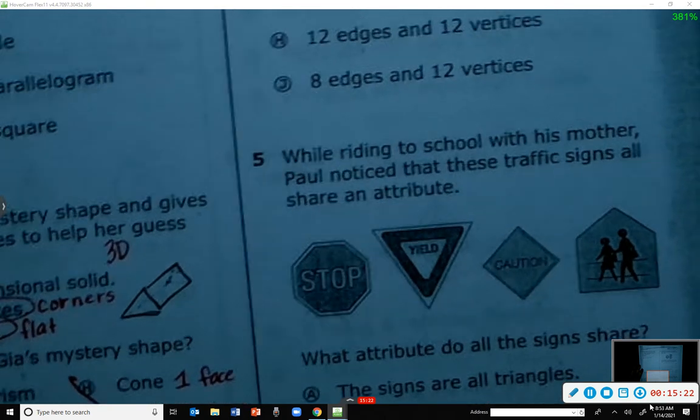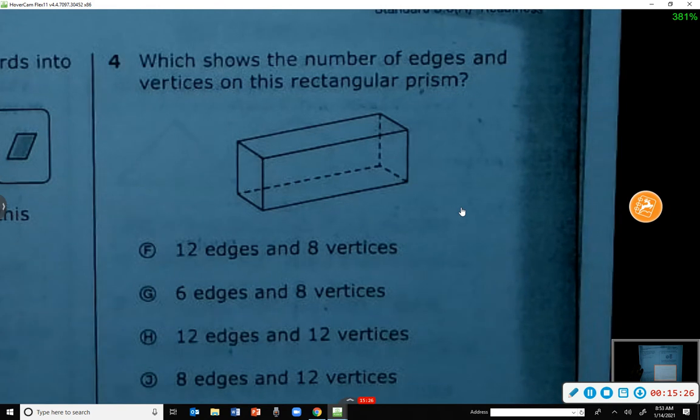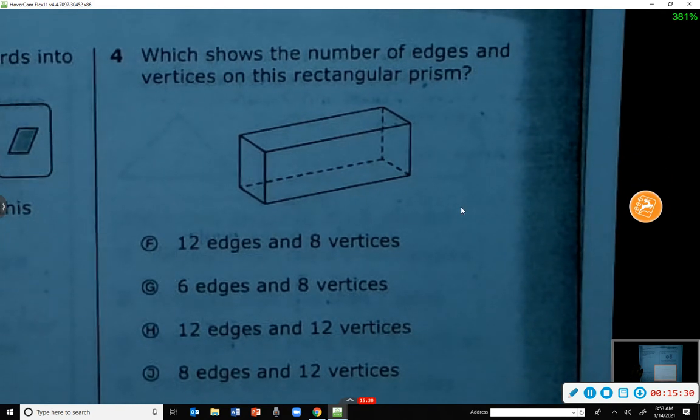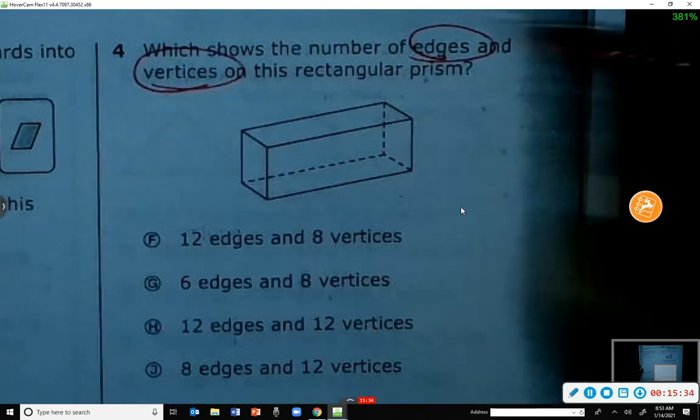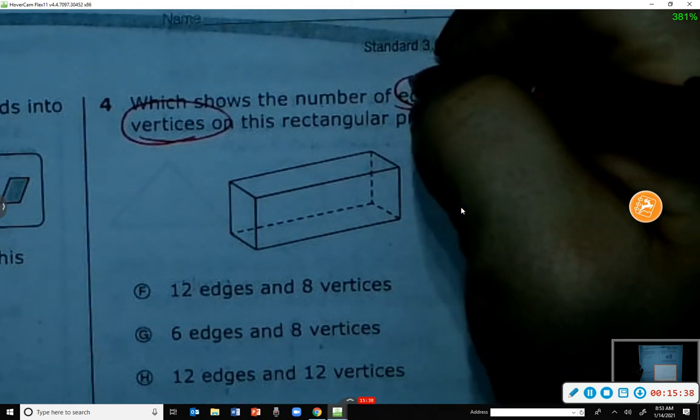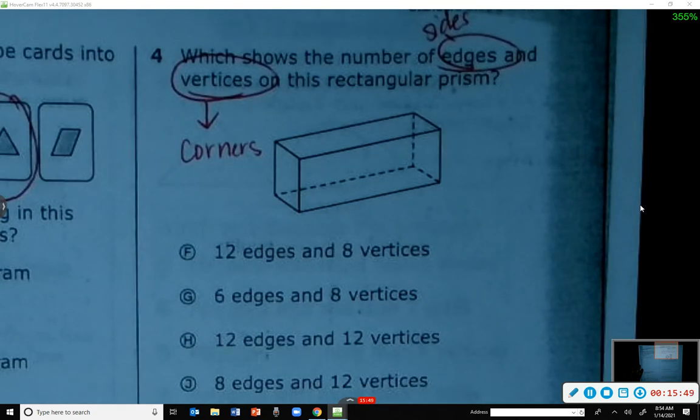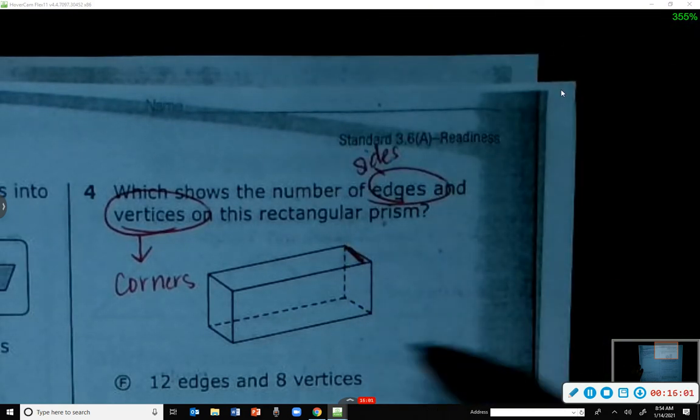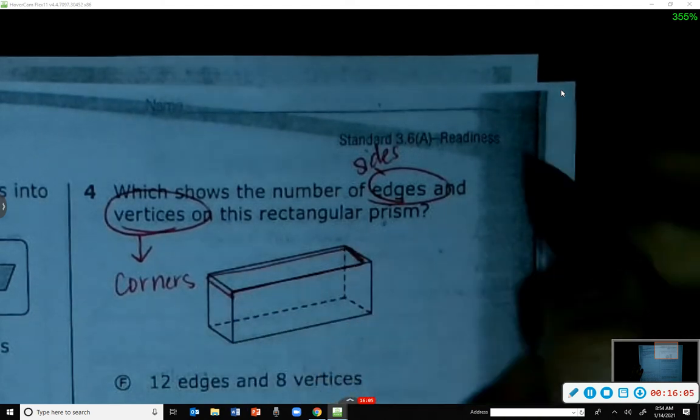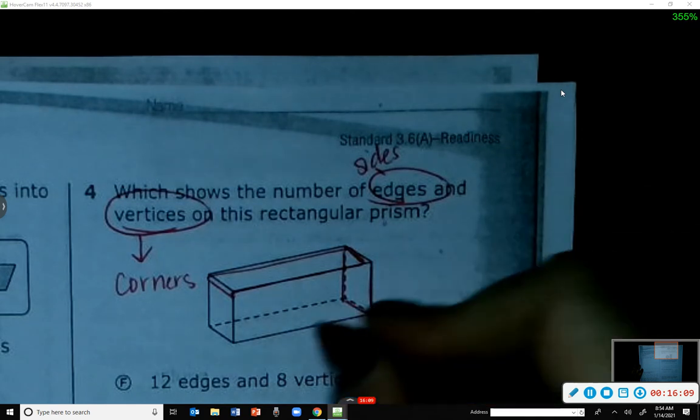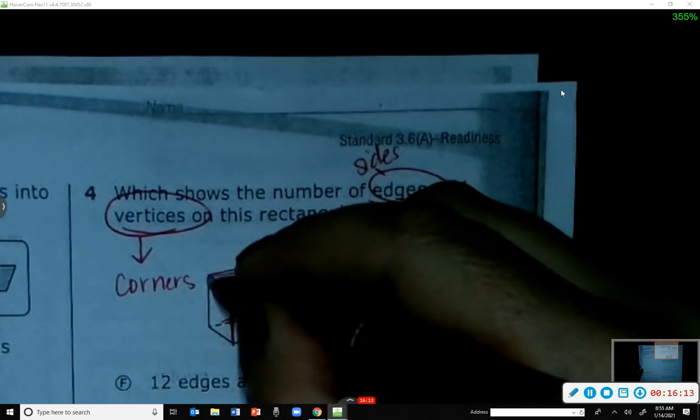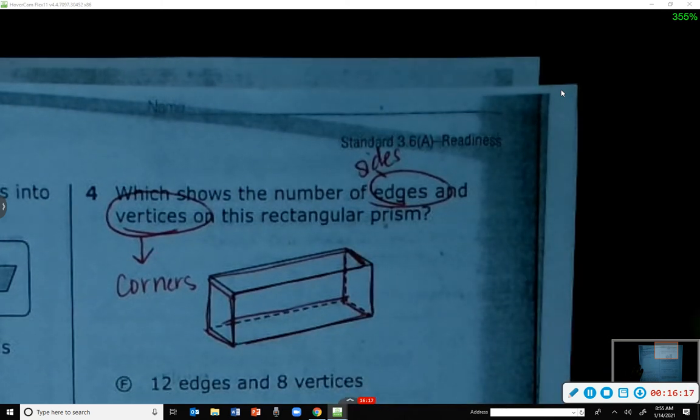Number four. I want you guys to try it on your own and we'll check and see if you got it right. Which shows the number of edges and vertices on this rectangular prism? So edges and vertices - edges you're going to count the sides, right? Vertices are the corners. Kaylee, what did you get for the edges? Twelve. Twelve edges. So let's see. If I'm going to count the edges, I'm going to count like this by tracing: one, two, three, four, five, six, seven, eight, nine, ten, eleven, twelve.